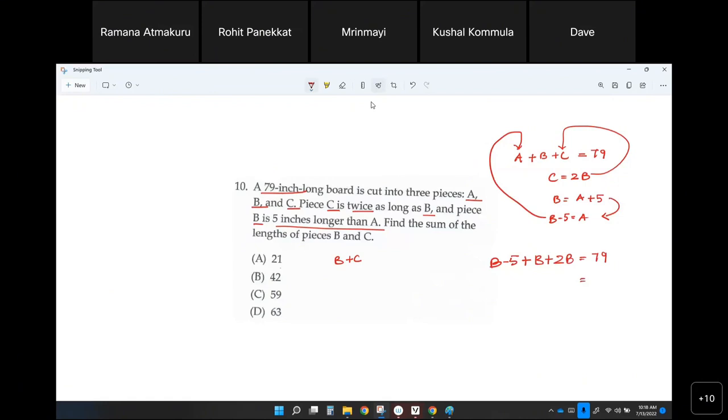So add 5 on both sides. You get 84. And then 4B. Got it, Amma? B equals 21.